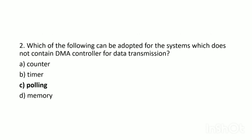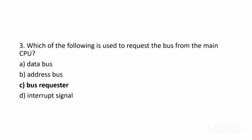Question 2: Which of the following can be adopted for systems that do not contain a DMA controller for data transmission? Options: A) Counter, B) Timer, C) Polling, D) Memory. The correct answer is Polling. Without a DMA controller, polling-type memory transfer can be adopted — the CPU polls the various ports continuously, checking whether any data transfer request is present, and if so, permits that transfer.